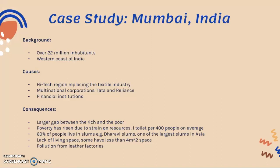However, there is a larger gap between the rich and the poor in Mumbai, and poverty has risen due to a strain on resources — shown by the fact that there is one toilet per 400 people on average. 60% of people live in slums such as the Dharavi slums, which are one of the largest slums in Asia, with very poor living conditions and lack of sanitation. There is a huge lack of living space, with some having less than four meters squared to live in. Finally, there is large pollution from leather factories and other industrial activities in this mega city area.